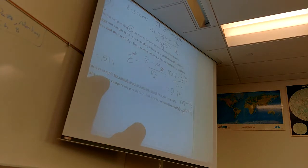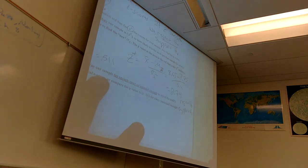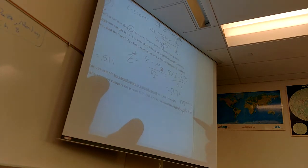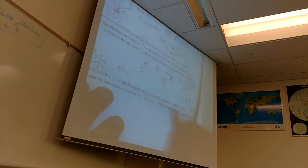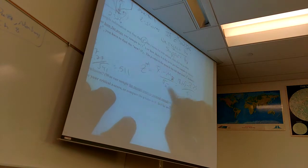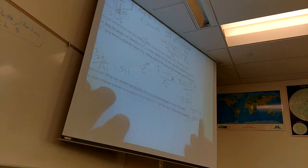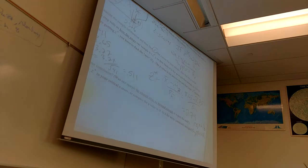Reject the H0. Support the H1. Now, remember when I was talking about how unlikely that score was to be up there — what was the probability of getting that result or more extreme? That's what we call the p-value.